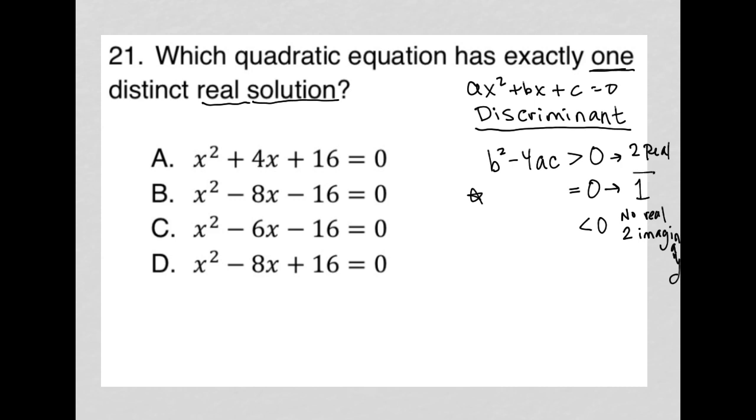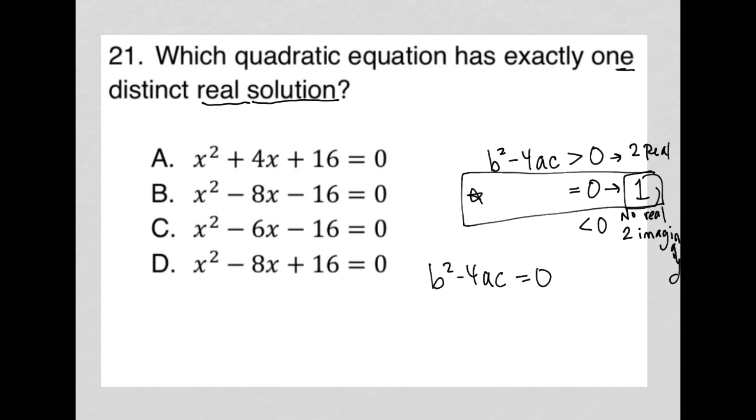So here's where we want to be. We want our b² - 4ac to equal zero in order to have one real distinct solution. We have to basically do this process for each of these answer choices. I'm going to erase these review notes here for the time being.